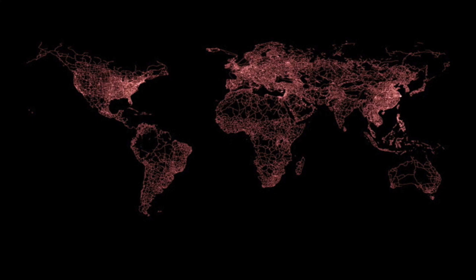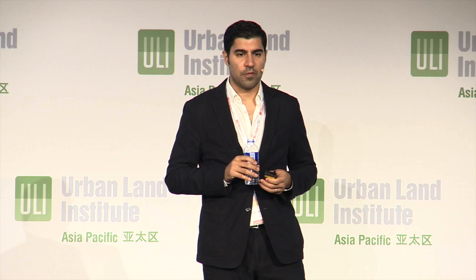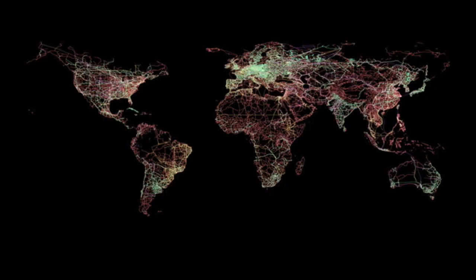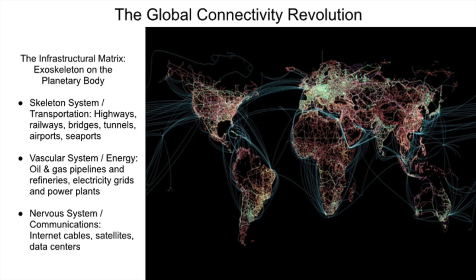If you actually map out all of the world's transportation, energy, and communications networks — for example, here are all of the world's highways and railways — and you can layer on top of that all of the world's oil and gas pipelines and electricity grids. And of course, let us not forget the world's internet cables, though in fact they have just been forgotten, but here they are.